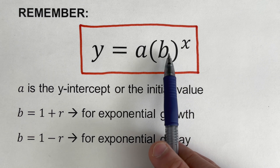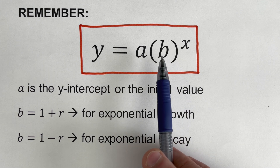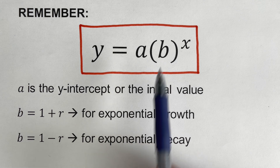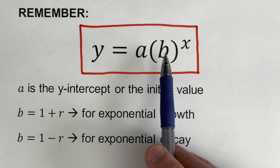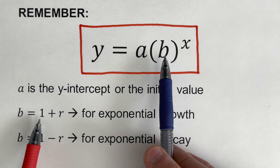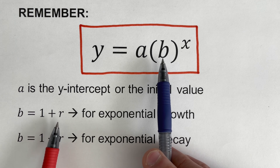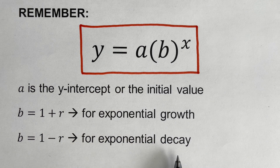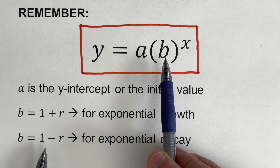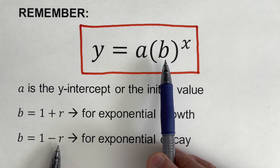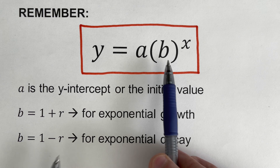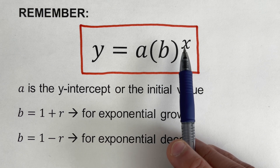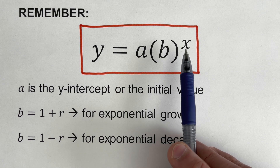The b here has two cases depending on whether it's exponential growth or exponential decay. If it's an exponential growth, b is equal to one plus r, where r refers to the growth rate. On the other hand, if it is an exponential decay, the b value would be equal to one minus r, because r is the rate of decay. The x value refers to the number of time periods.